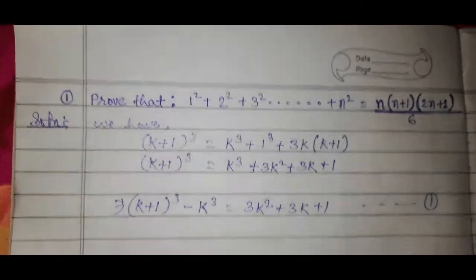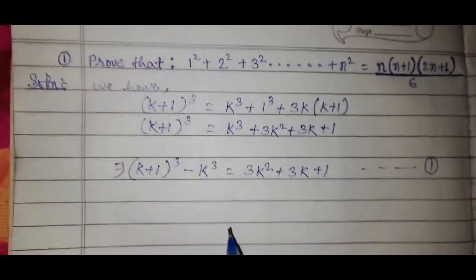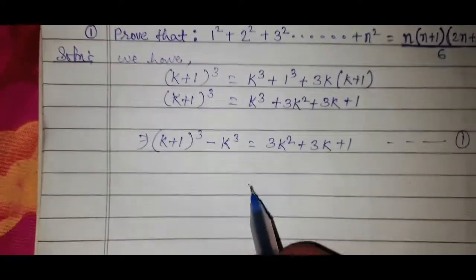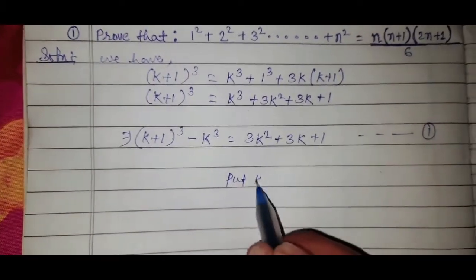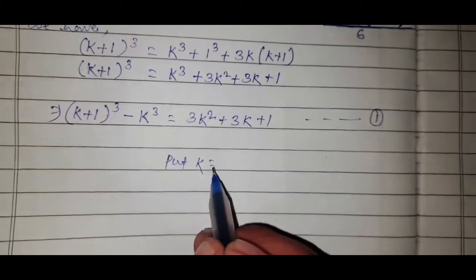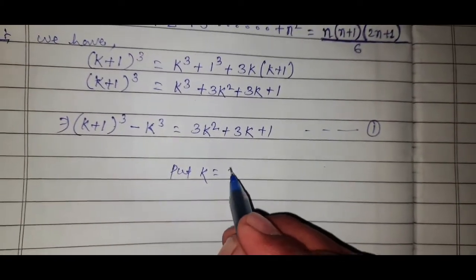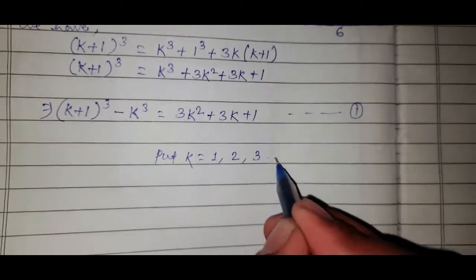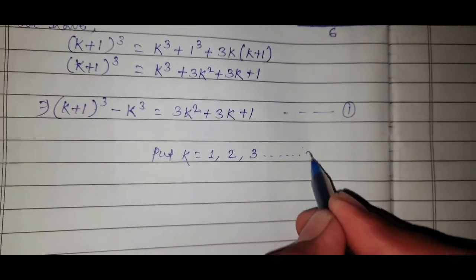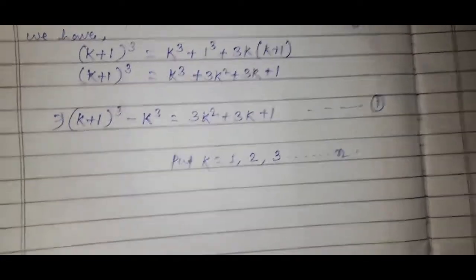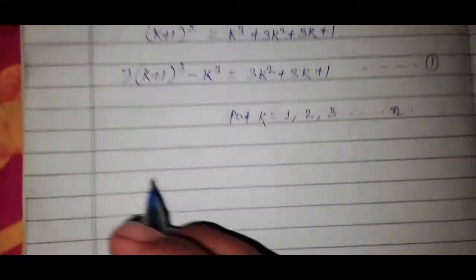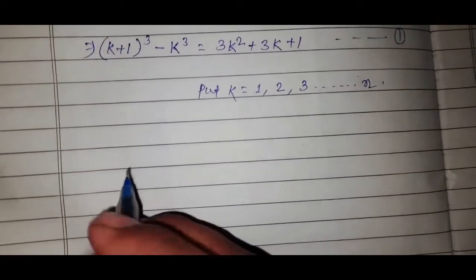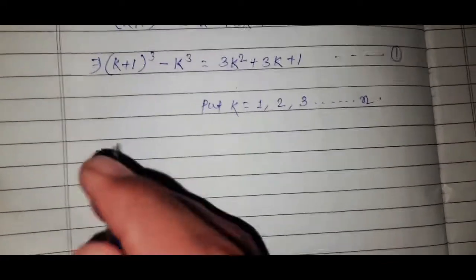Now put k = 1, 2, 3, ... up to n. We will substitute each value. First put k = 1, so in place of k we put 1.